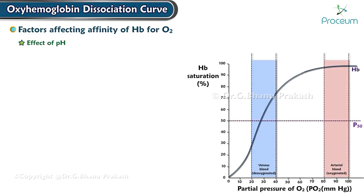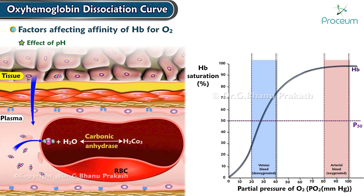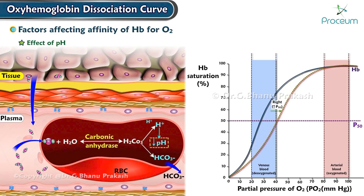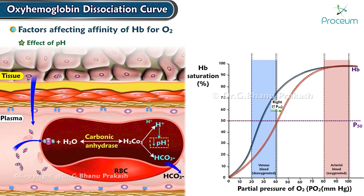Changes in blood hydrogen ion concentration (pH) shift the oxyhemoglobin dissociation curve. An increase in carbon dioxide production by tissue and its release into blood results in the generation of hydrogen ions and a decrease in pH. This shifts the dissociation curve to the right, which has a beneficial effect by aiding in the release of oxygen from hemoglobin for diffusion into tissues. This rightward shift is due to the decrease in pH and to a direct effect of carbon dioxide on hemoglobin.